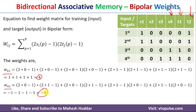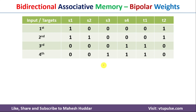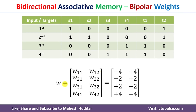So W41 equals plus 4 and W42 equals minus 4. Once we calculate all these weights, we need to put them into the proper weight matrix W, with entries W11, W12, and so on. All values have already been calculated, and placing them into the matrix gives the final bipolar weights for the bidirectional associative memory.